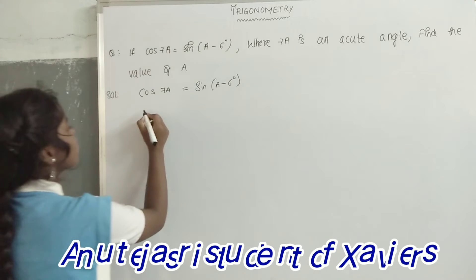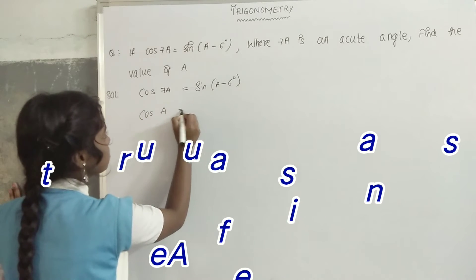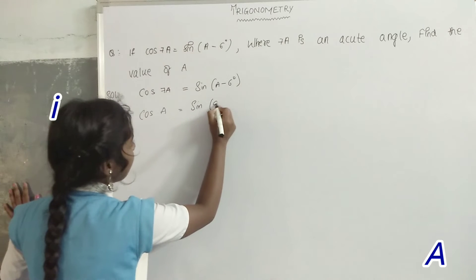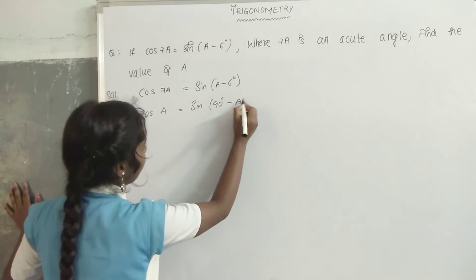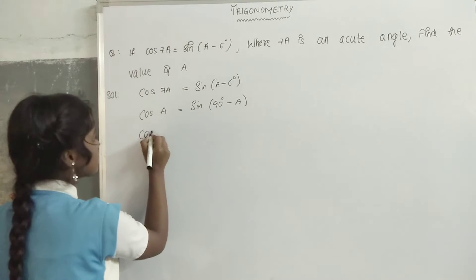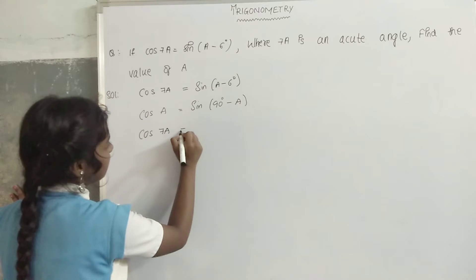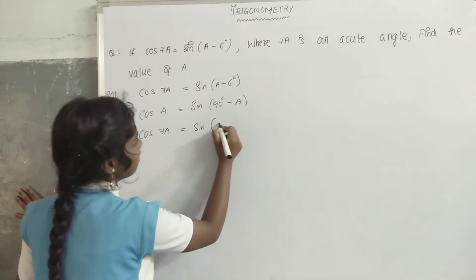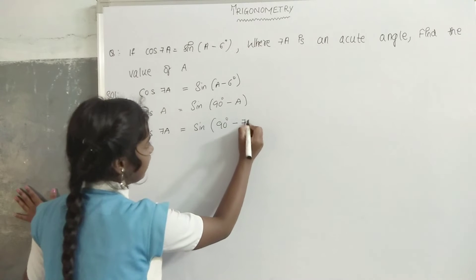We know that cos a is equal to sin(90 degrees minus a). So, replacing the values: cos 7a is equal to sin(90 degrees minus 7a).